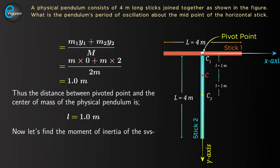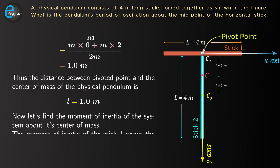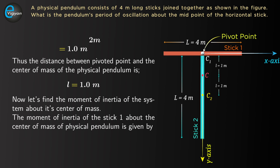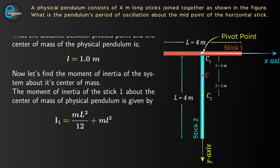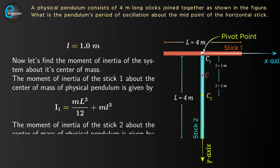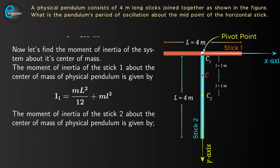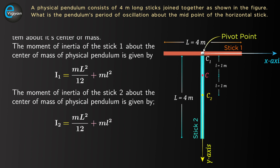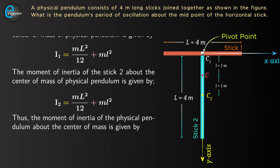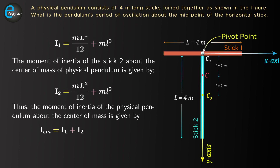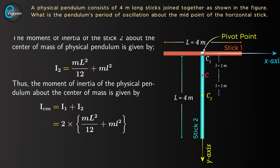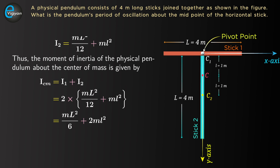Now let's find the moment of inertia of the system about its center of mass. The moment of inertia of stick 1 about the center of mass of the physical pendulum is I1 equal to mL squared upon 12 plus mL squared, where mL squared over 12 is the moment of inertia of stick 1 about its own center of mass. Similarly, I2 equal to mL squared over 12 plus mL squared. Thus ICM equal to I1 plus I2 equals 2 times mL squared over 12 plus mL squared, which simplifies to mL squared over 6 plus 2mL squared.